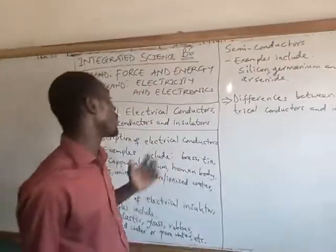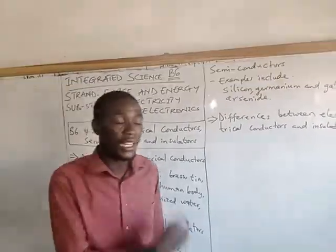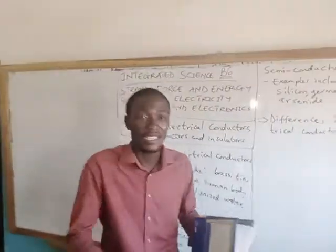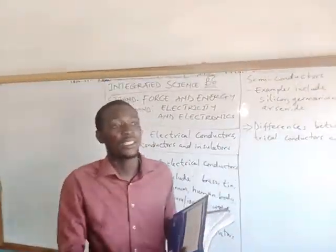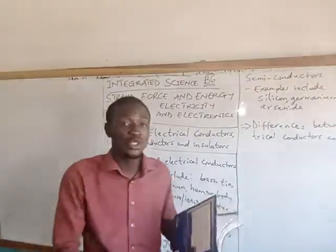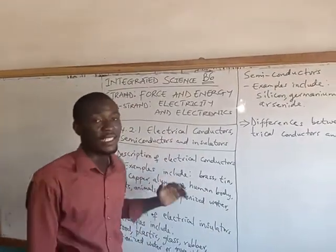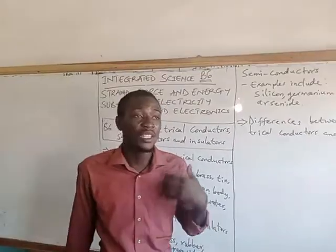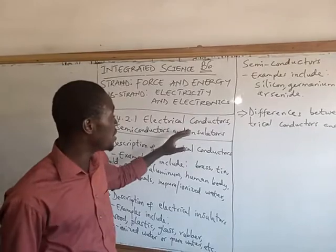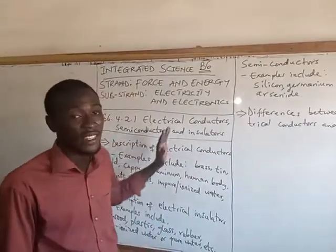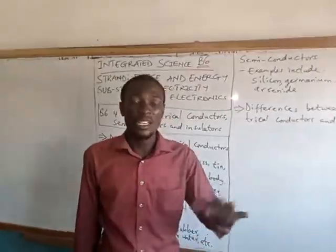In this lesson, we want to look at electrical conductors, semiconductors, and electrical insulators. As we learned previously about electricity, we need a circuit or a path through which electricity or electric current can flow, so that we can get it to various destinations or power up our electric appliances or gadgets. We also learned that we need a medium through which electric charges can flow, and these media are scientifically known as electrical conductors — materials that allow or easily allow electricity to flow through.